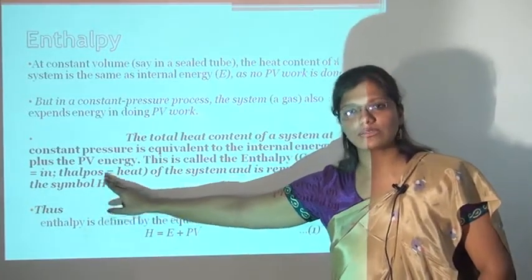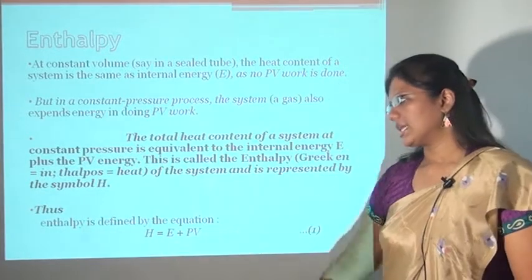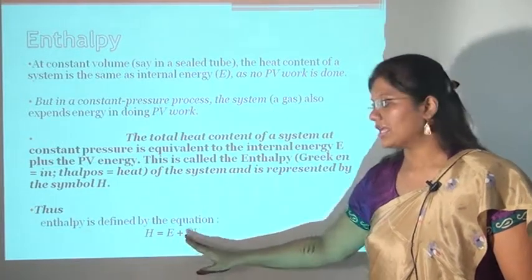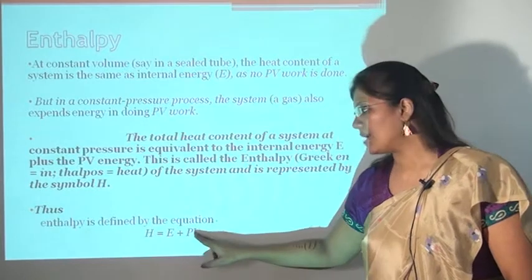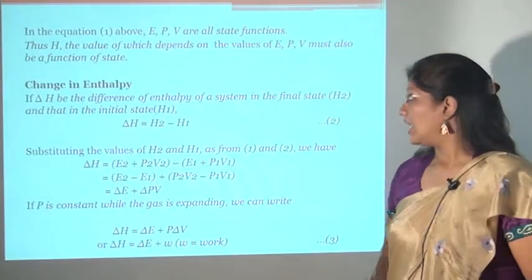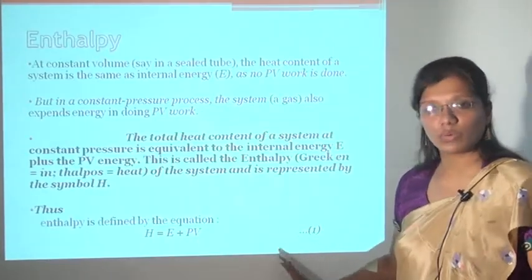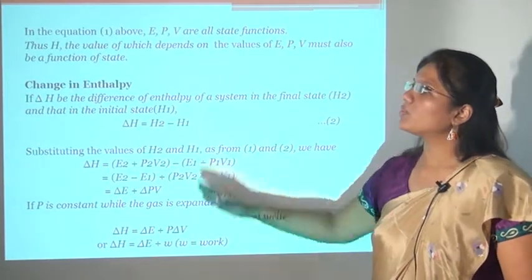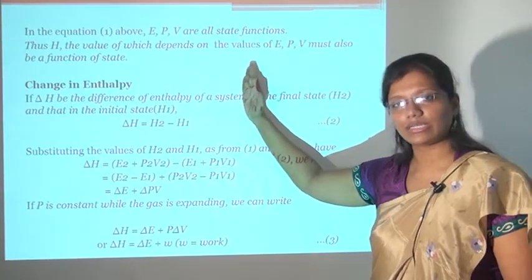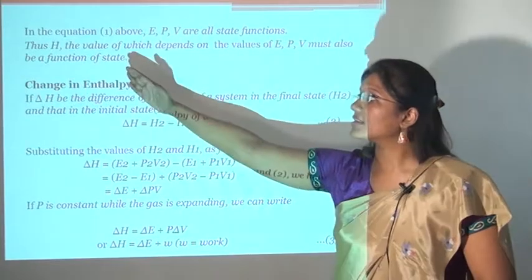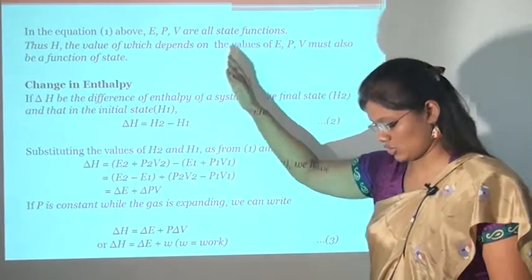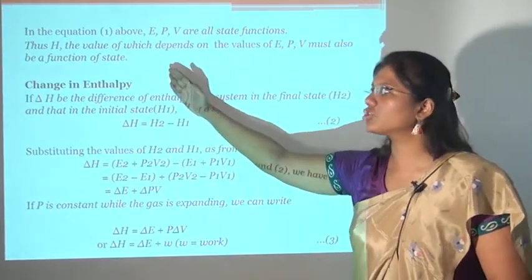Enthalpy is represented by capital H. Thus, the enthalpy of the system is defined by the equation H = E + PV, where H is enthalpy, E is internal energy, and PV is pressure times volume. This is equation number 1. In equation 1, E, P, and V are all state functions — they change with the state. Therefore H, whose value depends on the values of E, P, and V, must also be a function of state. Enthalpy is also a state function.